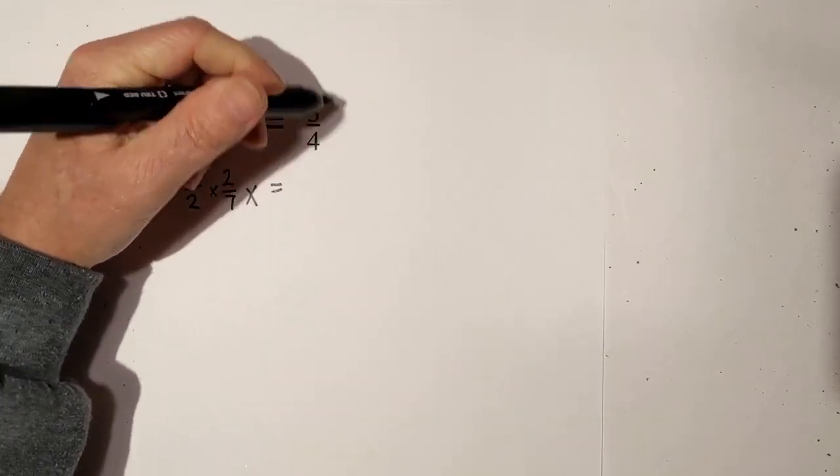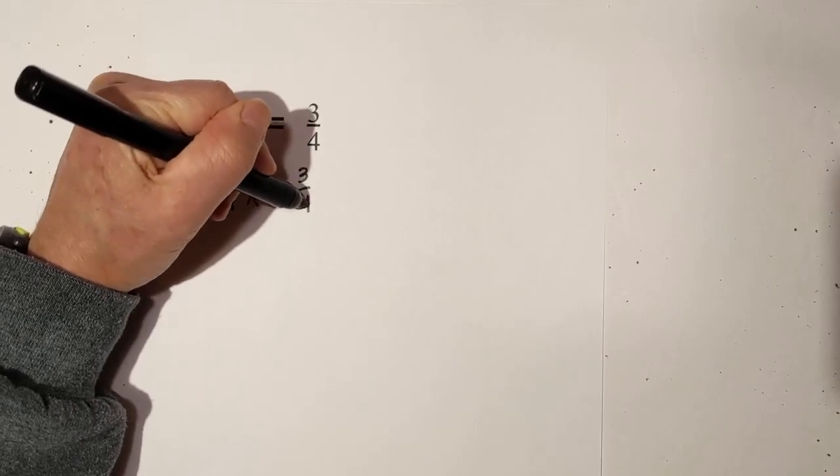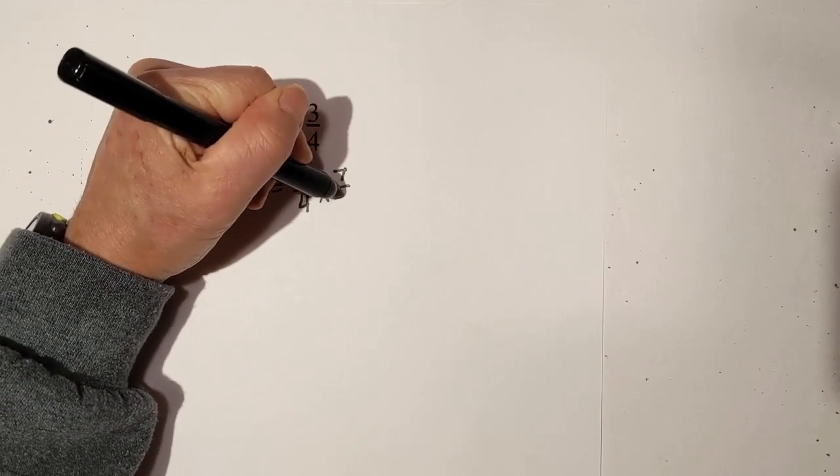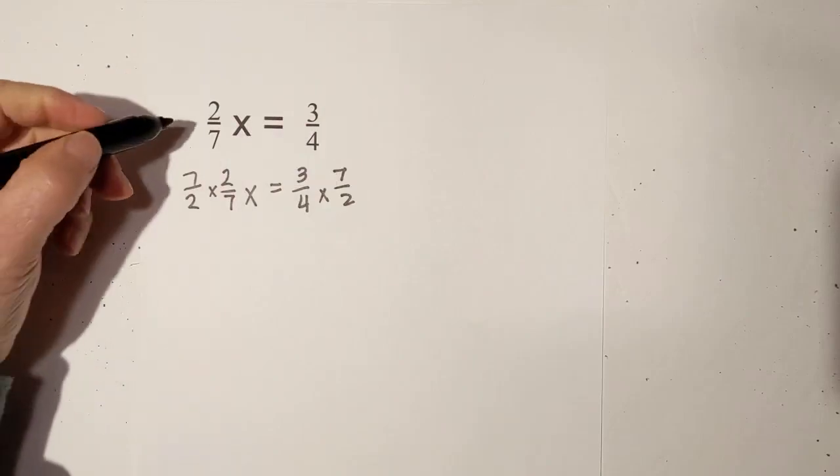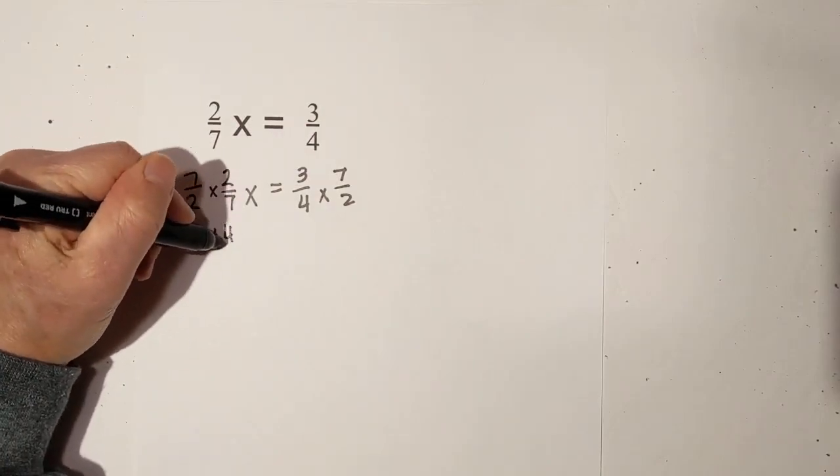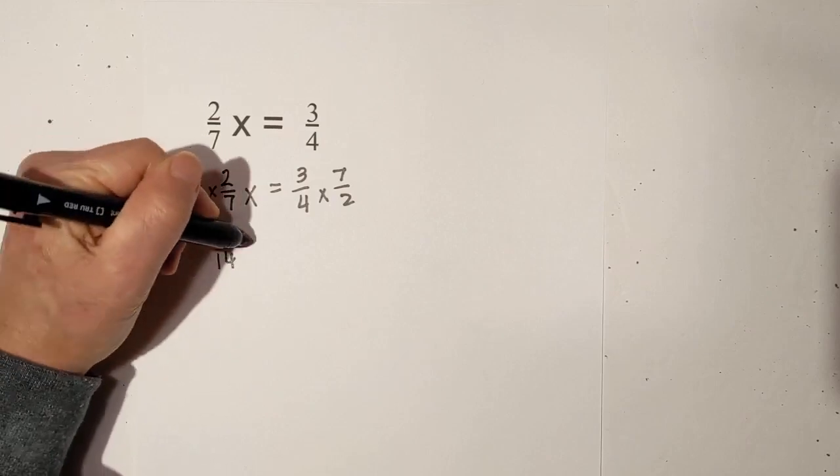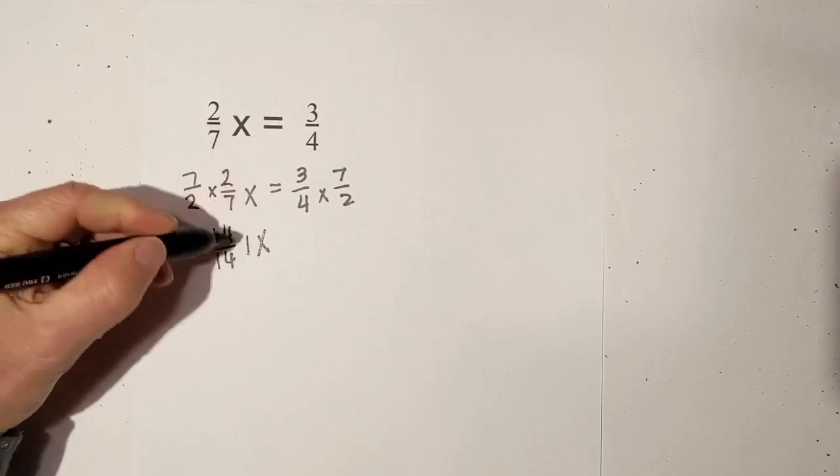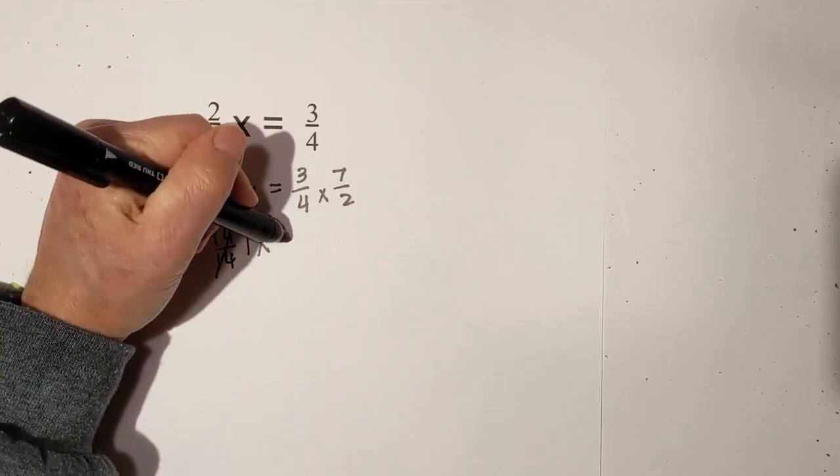What we do to one side, we must do to the other, so 3 fourths times 7 halves. Here's why this works: 7 times 2 is 14, 2 times 7 is 14. That becomes 1, so you get the coefficient in front of x as 1.